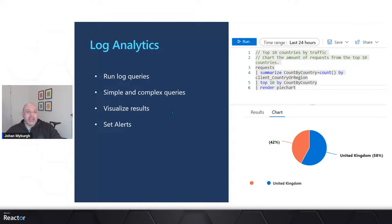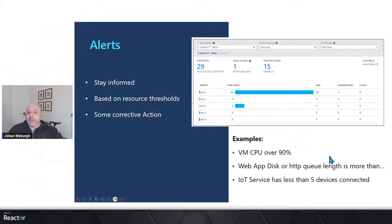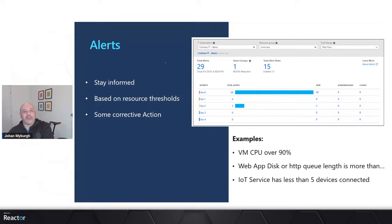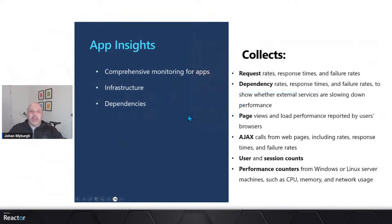That's the log analytics workspace — complex queries on your logs, visualized results, even set alerts to trigger some behind the scenes. Alerts help me to stay informed based on certain thresholds that I can set, and in some cases allows us to have some corrective action. I might trigger a PowerShell script that essentially fixes the problem if I know exactly what the problem is. Then last but certainly not least, we've got App Insights. I could probably spend two hours talking about App Insights. App Insights is essentially Azure Monitor on steroids — comprehensive monitoring for apps, not just web apps, but also Windows applications and console applications. I can instrument all of those.